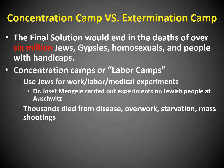Thousands died from disease, overwork, starvation, or mass shootings. The concentration camps or labor camps did not have gas chambers — it was forced work. They would randomly kill prisoners if they weren't doing a good job or got too old. Many also died just from being overworked and not fed enough. They were basically living on top of each other, treated like rats, and with so many people living together, a lot of disease spread.